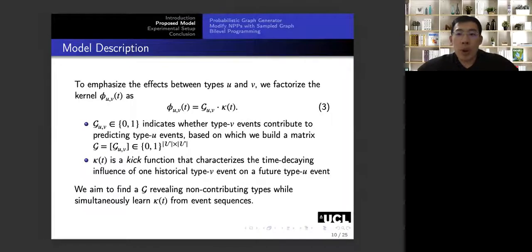The limitation of these existing models is that they use all types of historical events to predict the occurrence of a future event. And they did not consider that some event types actually do not contribute to the prediction of that event type. And this will hurt the performance of neural point processes. So in order to address this issue, in this paper, we emphasize the influence between different event types.